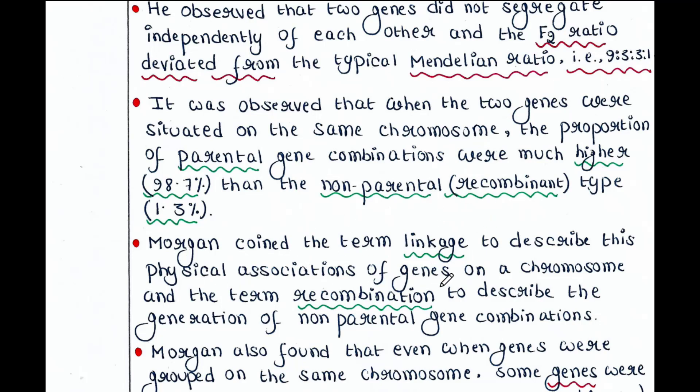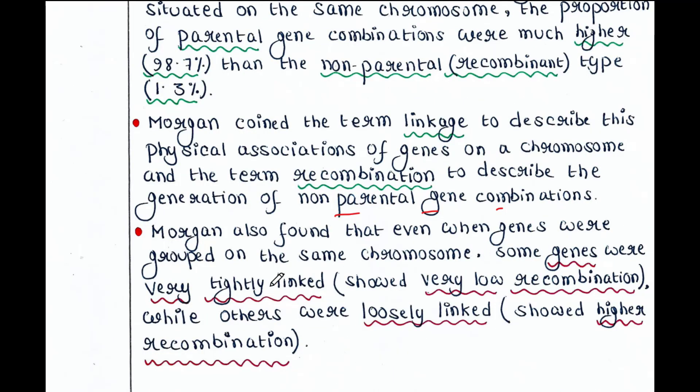Morgan also found that even when genes were grouped on the same chromosome, some genes were very tightly linked. Very tightly linked genes always will show less recombination because between those genes, crossing over is very less. While others were loosely linked and they showed higher recombination, since crossing over was higher when genes are placed far away.